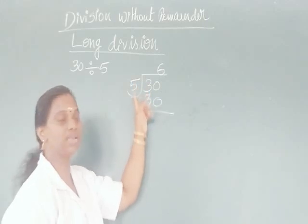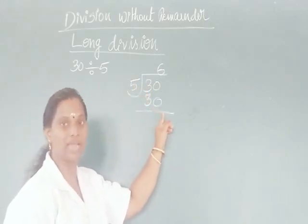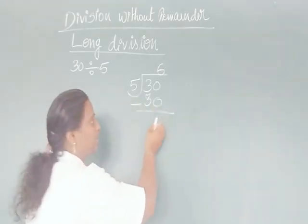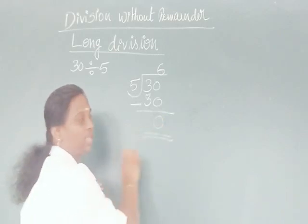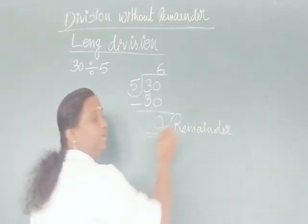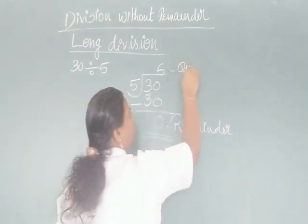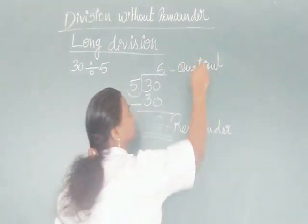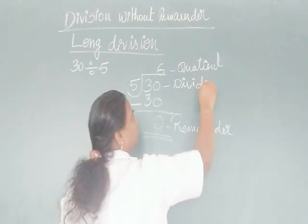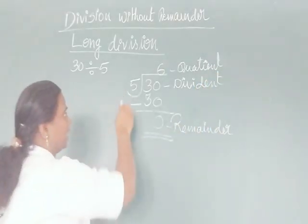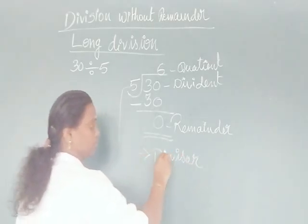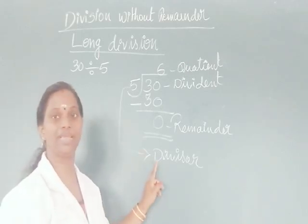Then subtract: 30 minus 30 equals 0. So 0 is called the remainder. 6 is called the quotient, 30 is called the dividend, and 5 is called the divisor.